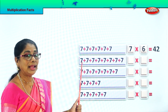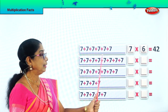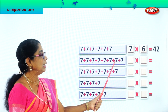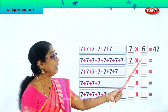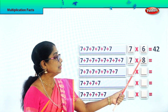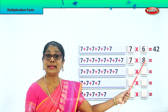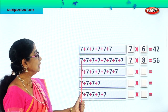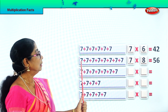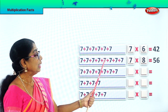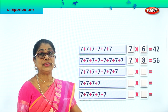Here you have 7. How many times? 1, 2, 3, 4, 5, 6, 7, 8. 8 times. 7 eights are? 7 plus 7 plus 7 plus 7 eight times. 7 is 56. Multiplication.